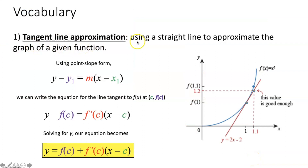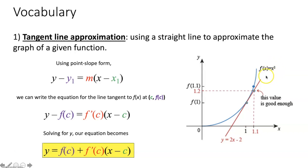First thing we're talking about is a tangent line approximation — that would be using a straight line to approximate the graph of a given function. You're going to be given a crazy function like the one in blue, and you're going to be asked to approximate the value of that blue function at some x value like 1.1 or 1.01 — something where you wouldn't be able to just evaluate it yourself without a calculator.